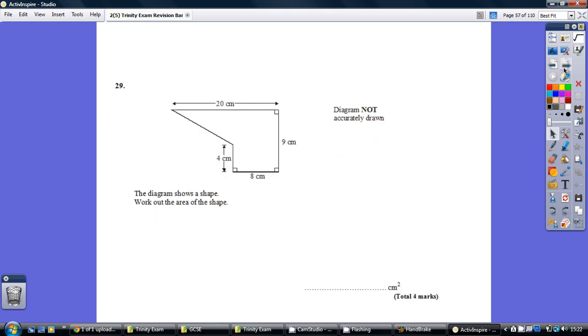Question 29, have a go. Okay, so for a compound shape question like this, just divide it up into two simple shapes. If you pop a line down here, you've got a rectangle and a triangle. The rectangle is straightforward enough. That's just 9 times 8, which is 72.